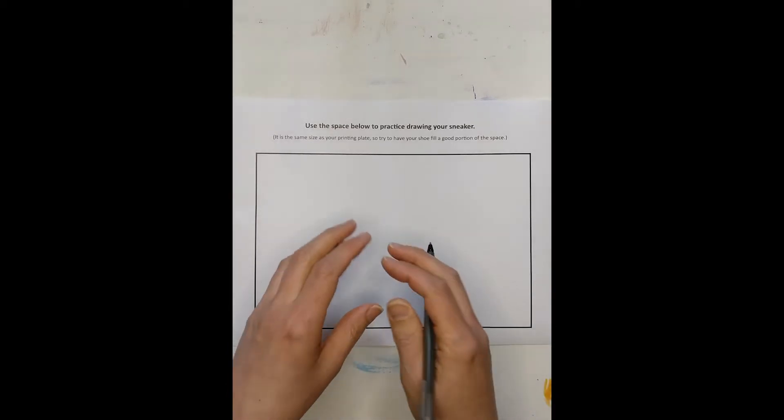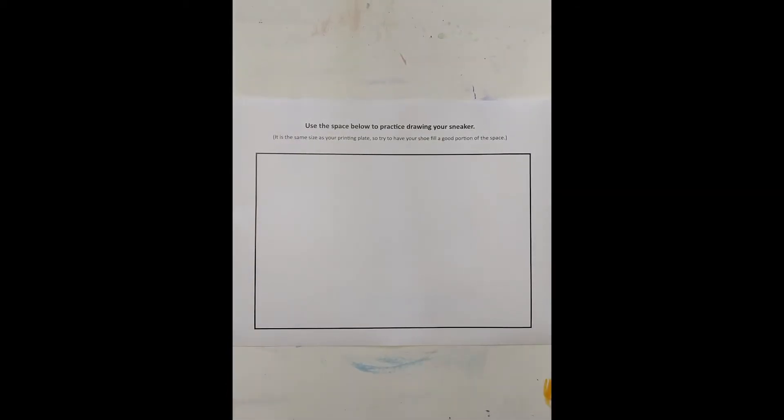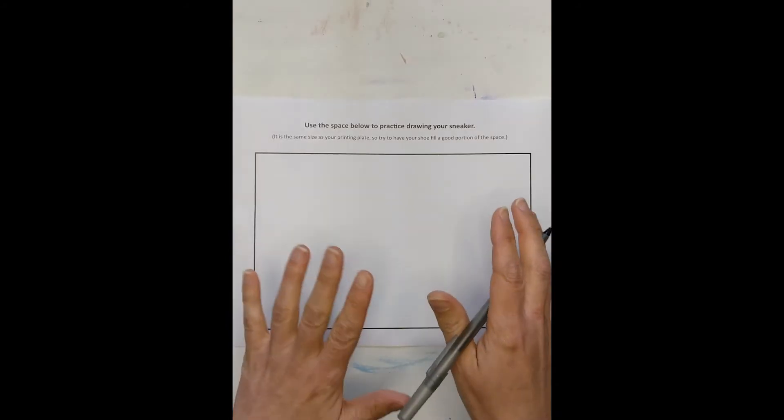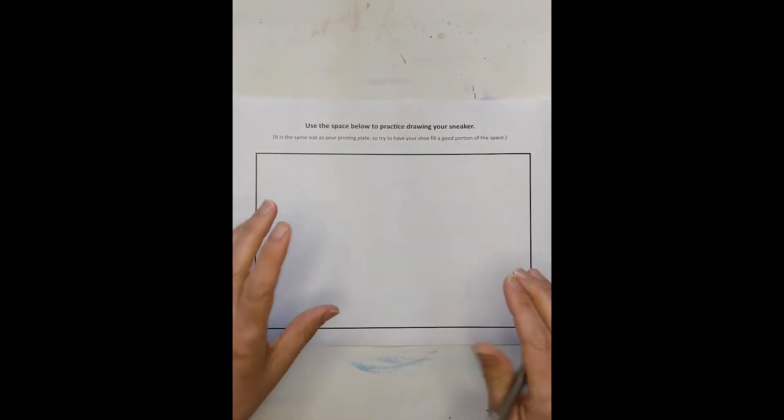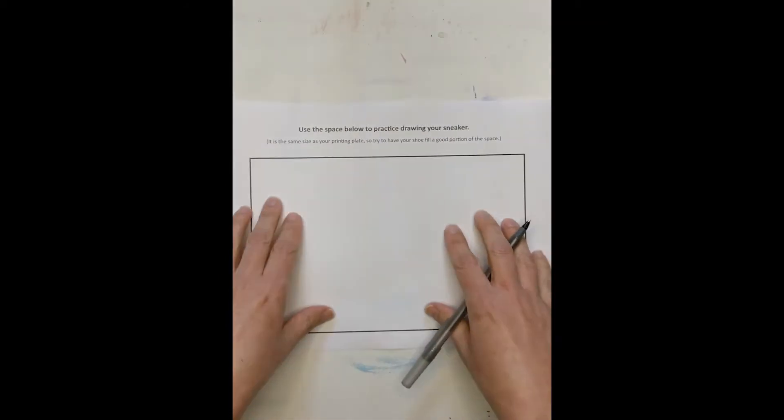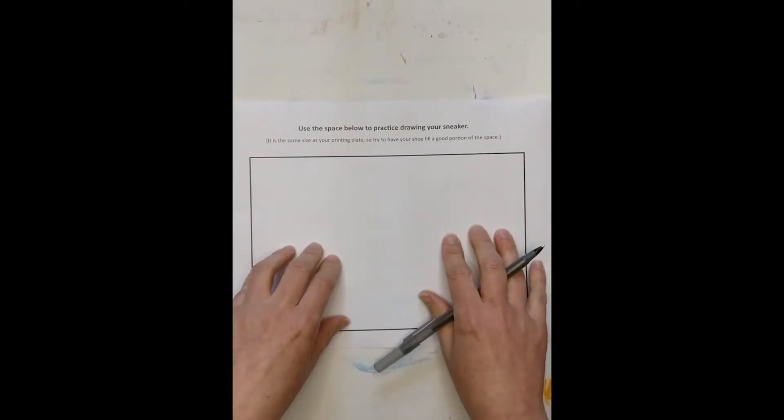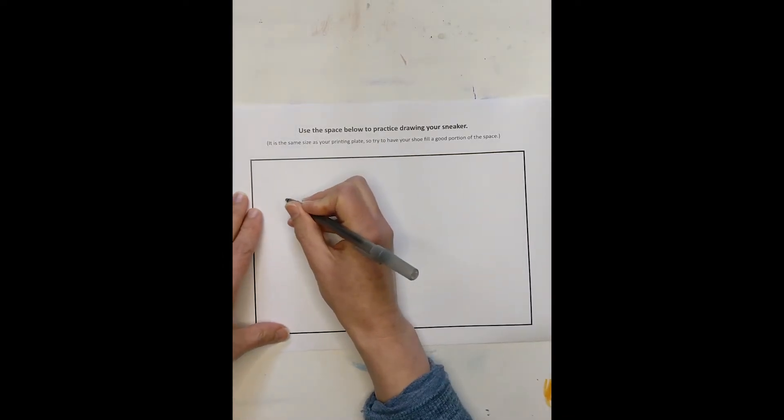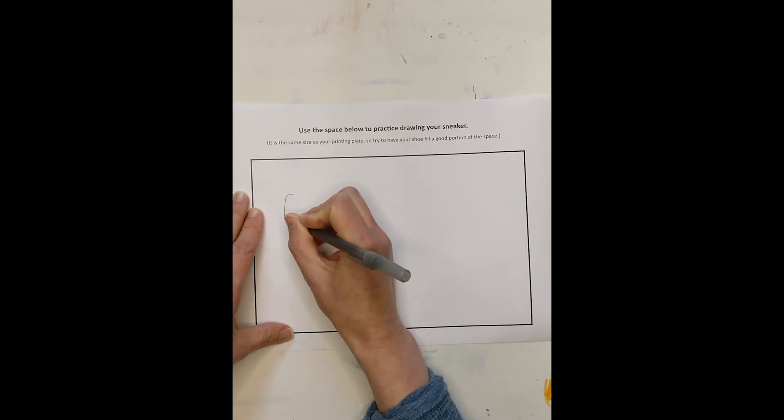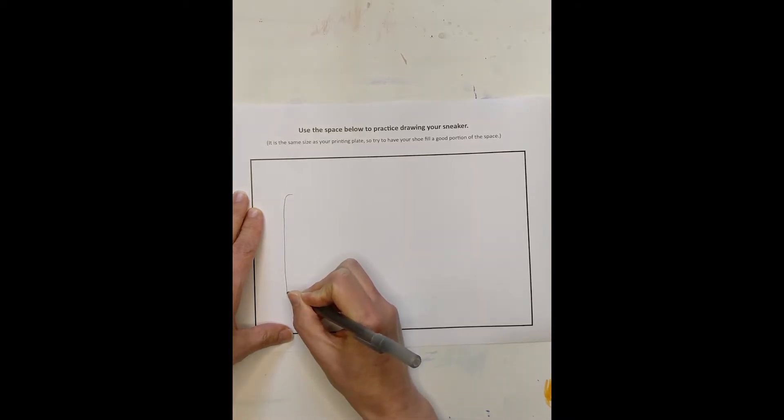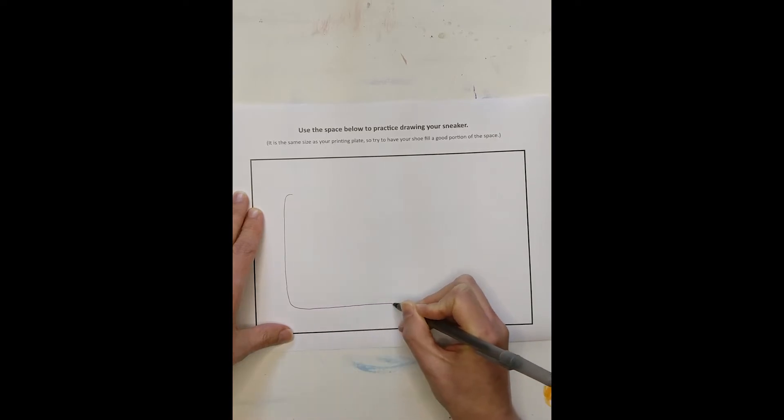So I'm going to go ahead and start drawing my shoe. And remember, for our prints, the lines that you draw are what are going to remain white. It's going to be the spaces around those lines that will be inking with markers. That's what's really going to be printed. So I am just going to start. I'm going to start up here for the sneaker. And just go across the bottom.